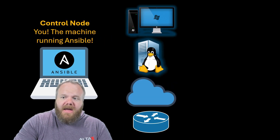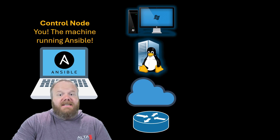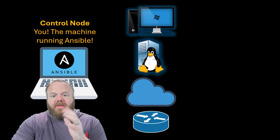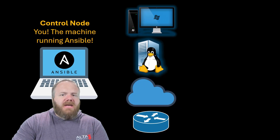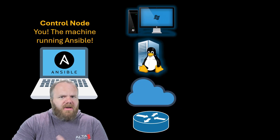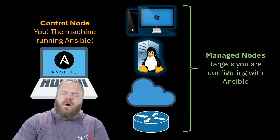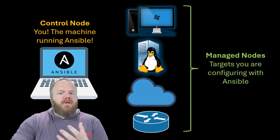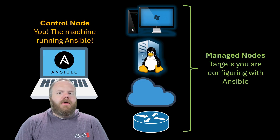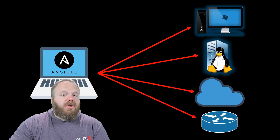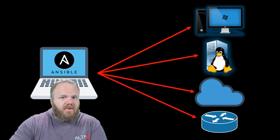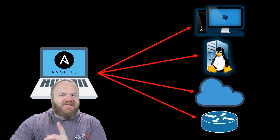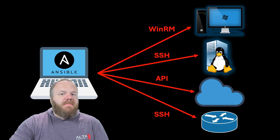Vocabulary time. Control node is the term for you — your computer, the machine that is running Ansible. And all these other machines — the Windows, Linux, cloud, and network devices — those are all managed nodes. Those are the machines that are going to be configured by Ansible. And what your control node is going to do is establish contact with any host that you tell it to. But what's tricky is that all these different types of platforms have different means of being connected.